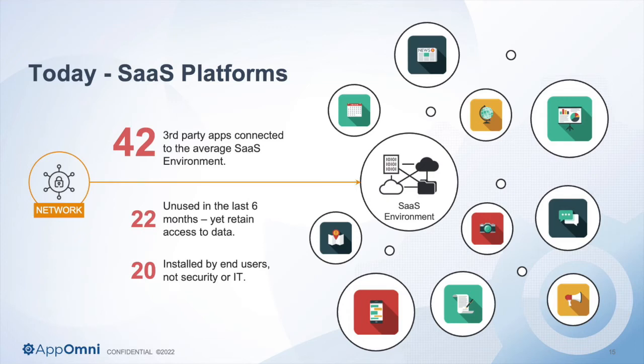App Omni has worked with hundreds of customers to secure their SaaS platforms, and this is the data we find. On average, there are 42 third-party applications connected into the average customer SaaS environment — 42 third-party apps either directly running on or integrated through cloud-to-cloud communication into your core SaaS applications. Of that number, 22 haven't been used in six months or more.